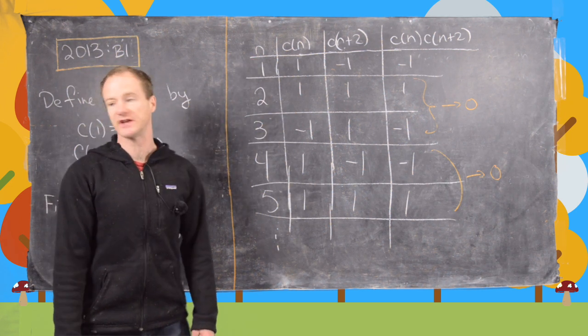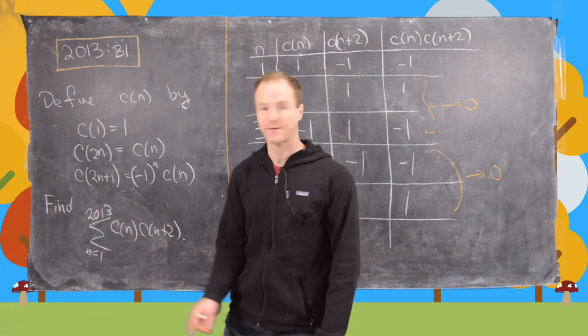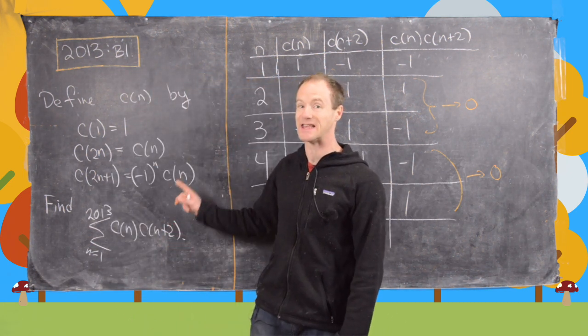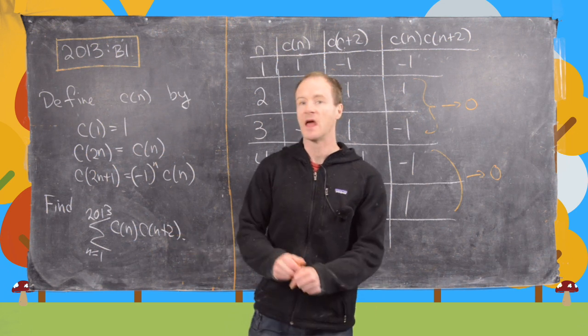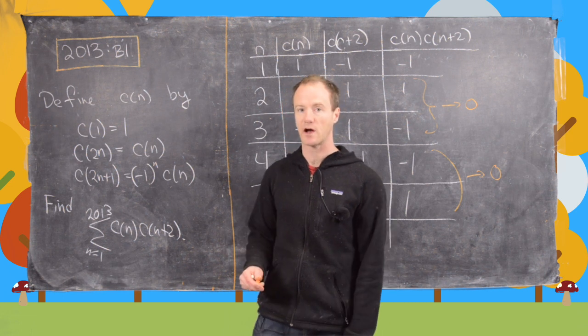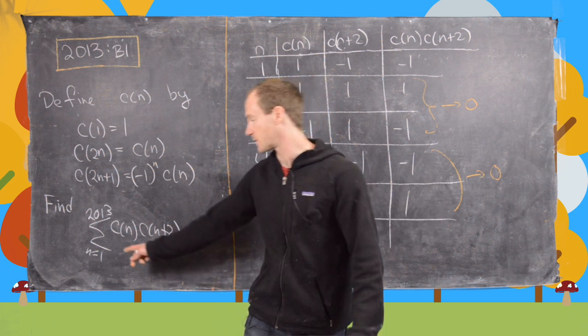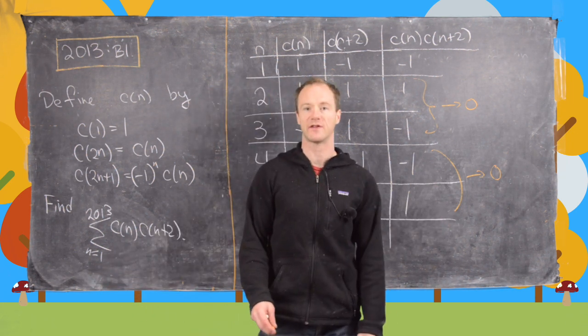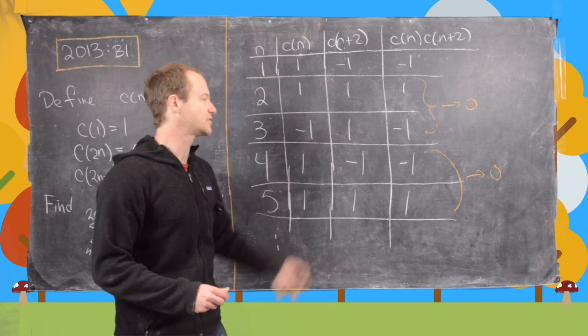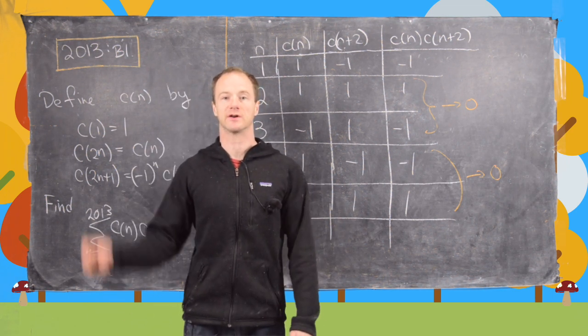So each consecutive pair, after you're at 1, pairs together to add to 0. And that's going to give us some motivation. So the motivation we take from that is that this sum, we will take its first term out. And after we've taken its first term out, it has an even number of terms. And we can split that even number of terms, 2012 terms, into half and half. Half which comes from even values of n and half that come from odd values of n. And we'll see that will bring up our cancellation, which we've noticed here. So I'll clean up the board and then we'll see that rigorously.